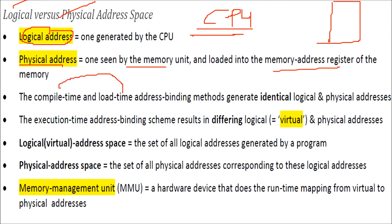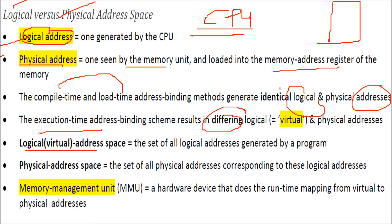The compile time and load time address binding methods generate identical logical and physical addresses. But the execution time address binding scheme results in different logical and physical addresses. The logical address space is the set of all logical addresses generated by a program or seen by the CPU, while the physical address space is the set of corresponding physical addresses.